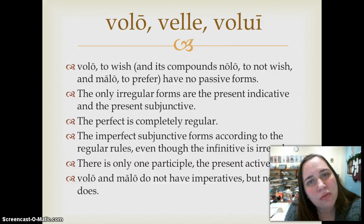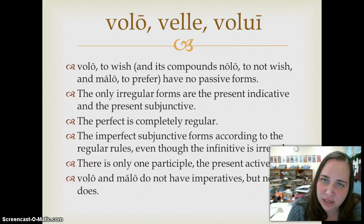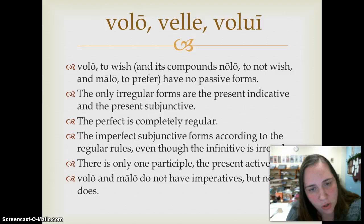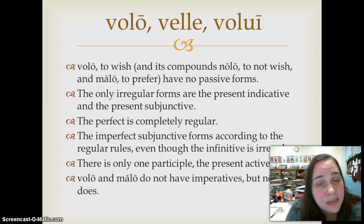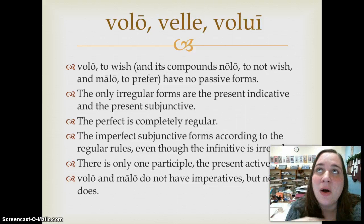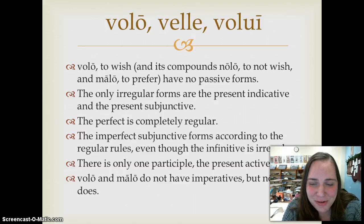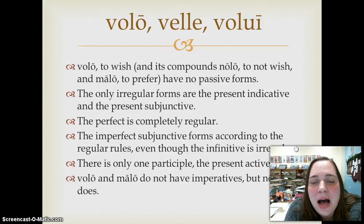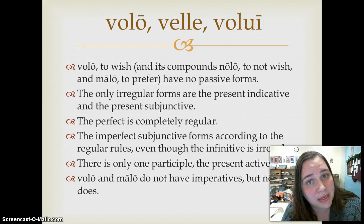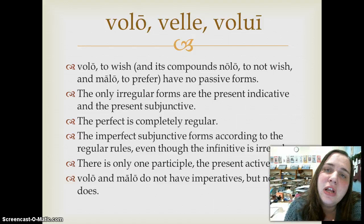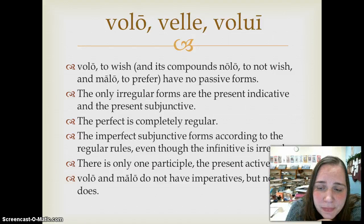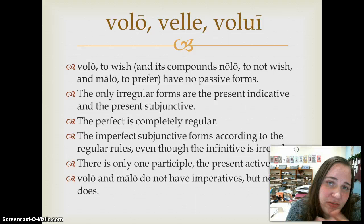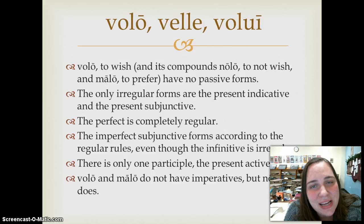Really the only irregular forms of this verb are in the present indicative and the present subjunctive. The perfect is completely regular, as always — this is why I love the perfect, pluperfect, and future perfect, because they always form the same for all verbs. The imperfect subjunctive forms are exactly what you'd expect: they follow the rules — it's the second principal part plus the endings. It's just that the present active infinitive looks a little strange: it's velle instead of any kind of -ere or -ire. There is only one participle, and that's the present active participle.